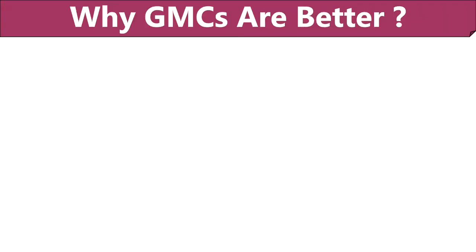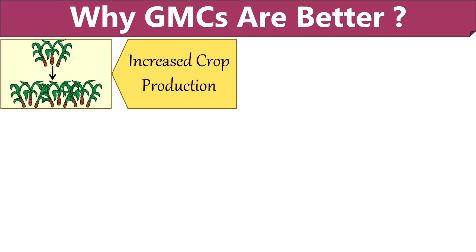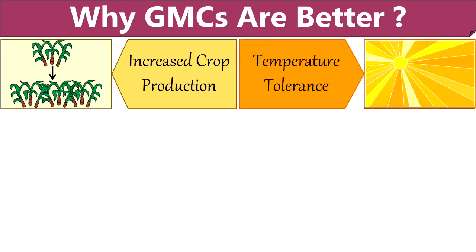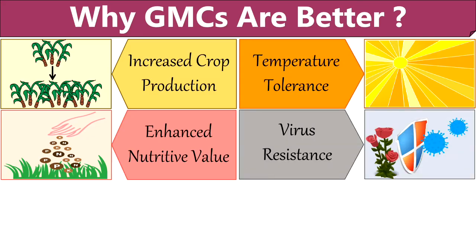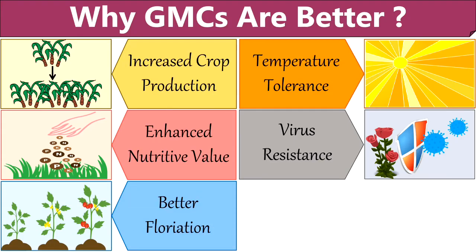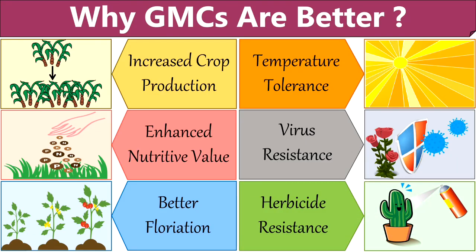Moving on to why genetically modified crops are better than conventional crops: GM crops are more tolerant to environmental conditions, thus the chances of crop damage are minimal, leading to increased crop production. These crops have better temperature tolerance and can survive extreme hot and cold weather. They have made it possible to cultivate crops with increased nutritional values. Genetically modified crops are less susceptible to viral diseases, making it easier for farmers to prevent crop damage. Regarding floriation — the production of flowers — GM crops are constructed to produce more quantity and better quality of flowers. These crops also have better resistance to chemical pesticides, herbicides, and fungicides.